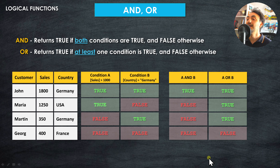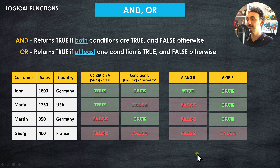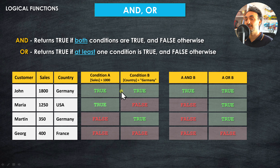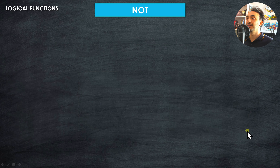One more thing to notice: when using AND and OR, we are evaluating the end result of the conditions — we are not evaluating the table itself, but the boolean results we got from each condition.